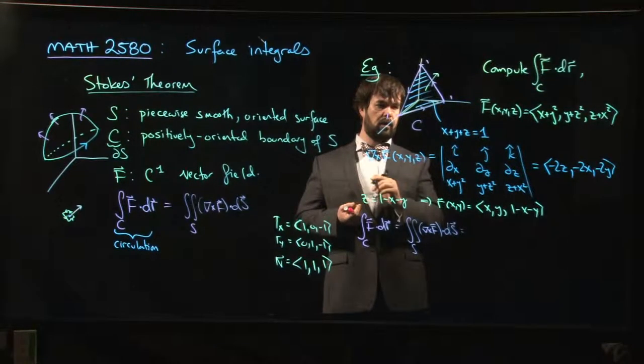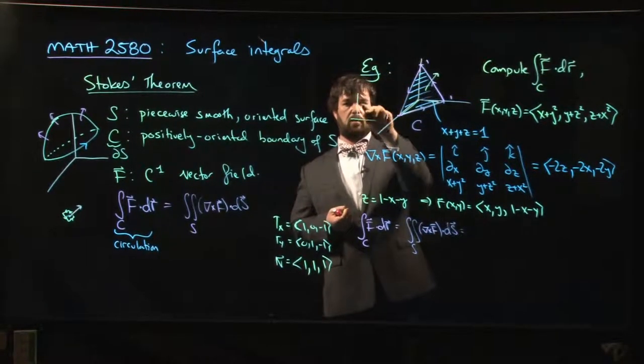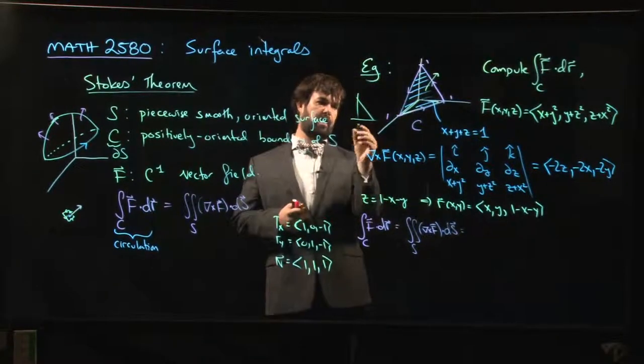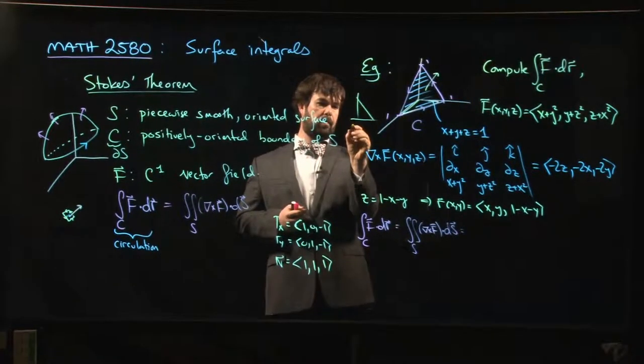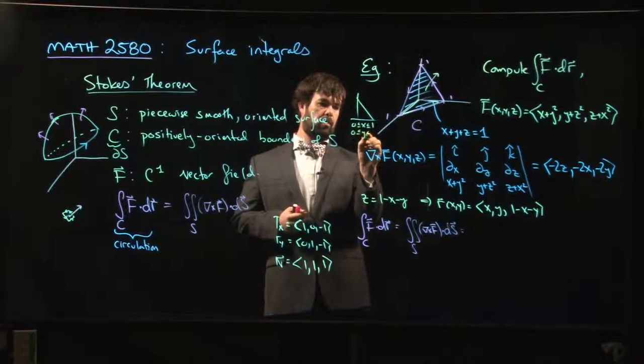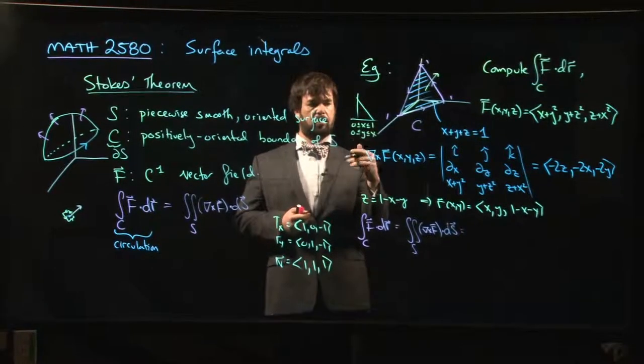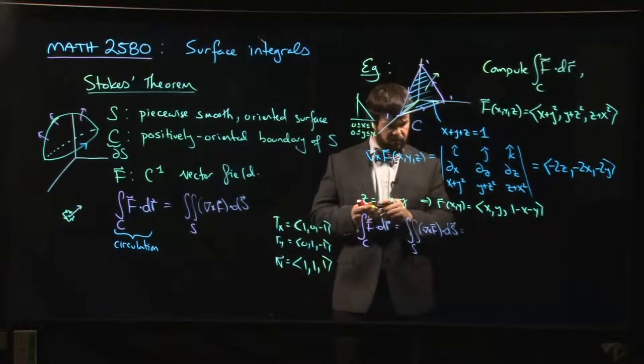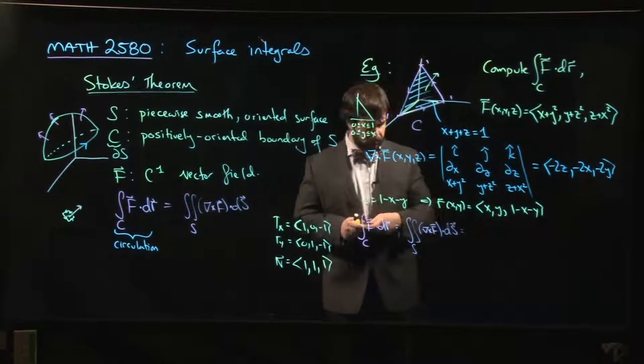So that triangle is this one. So we might say that x is between 0 and 1, and y is between 0 and x. You could do it the other way around; you've got to pick one. Let's do it that way.